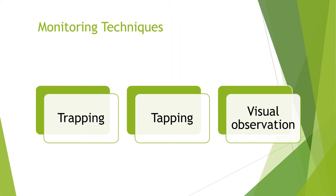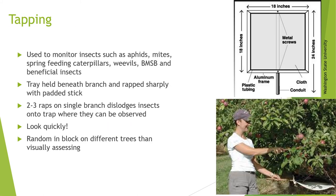The final technique I want to touch on is tapping. Tapping is used to look for insects that you might not as easily find through visual observation or trapping — very active insects that might move away when you're looking for them, or insects hiding higher in the tree than you can see. Insects that can be detected with tapping include aphids, mites, spring-feeding caterpillars, weevils, brown marmorated stink bug, and many beneficial insects. Tapping involves a tray that you hold underneath the branch; you then wrap sharply on the branch with a padded stick, which dislodges the insects onto the tray, and then you quickly note down what you're seeing. You would tap random trees within the block — not necessarily the same trees you're visually assessing.